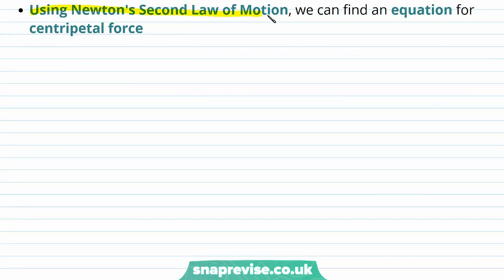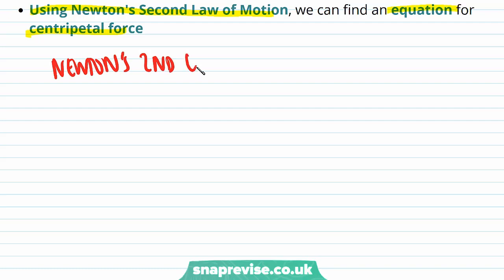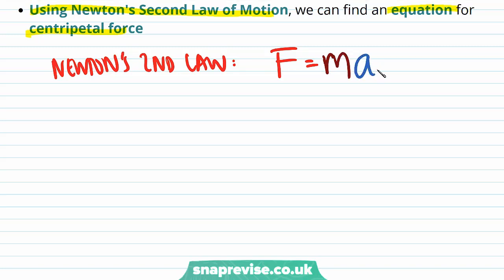Using Newton's second law of motion, we can find an equation for centripetal force. Newton's second law states that force is equal to mass times acceleration. So in order to find the centripetal force from the centripetal acceleration, all we need to do is multiply the centripetal acceleration by mass, and we get the following formulae.